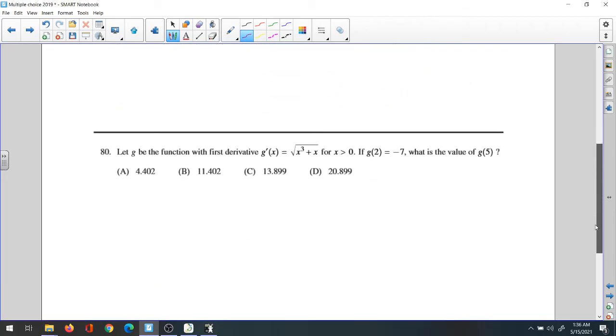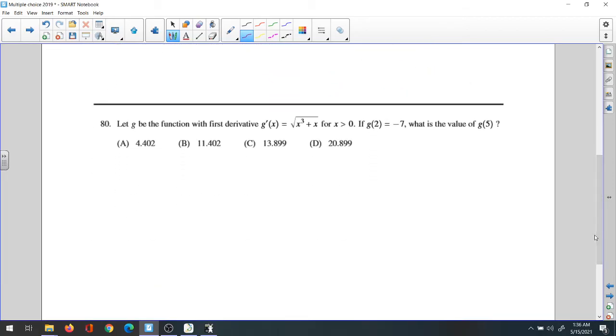Question 80. Let G be the function with first derivative G'(x) equals cube root of x³ plus x for x greater than 0. Given G(2) equals negative 7, what is the value of G(5)?